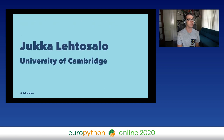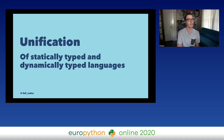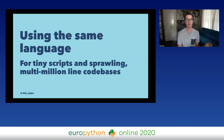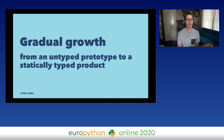Around this time, Jukka Lehtosalo was working on his PhD research at the University of Cambridge. His research was about the unification of statically typed and dynamically typed languages. He wanted to use the same language for everything from a tiny script to a sprawling multi-million line codebase, and he was focused on gradual growth — slowly migrating from an untyped prototype to a statically typed product. He wanted to make static typing completely optional.